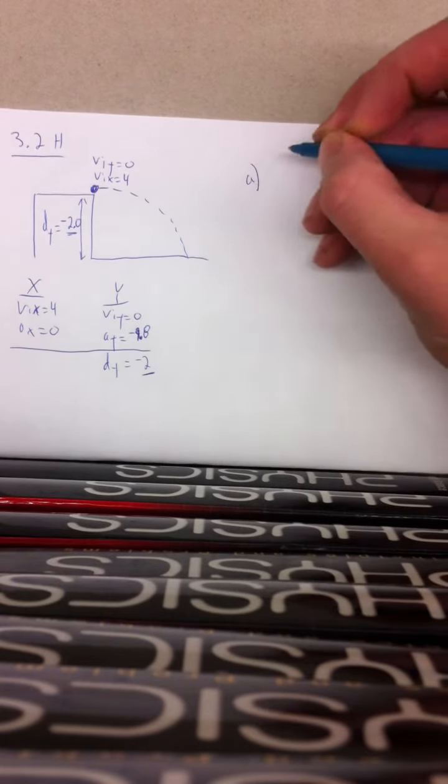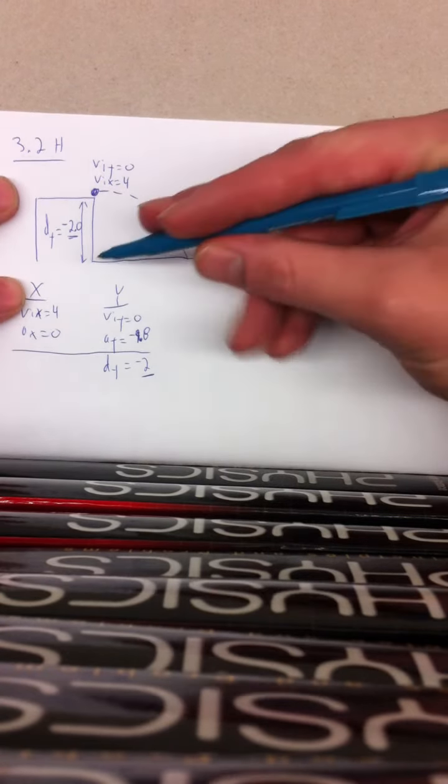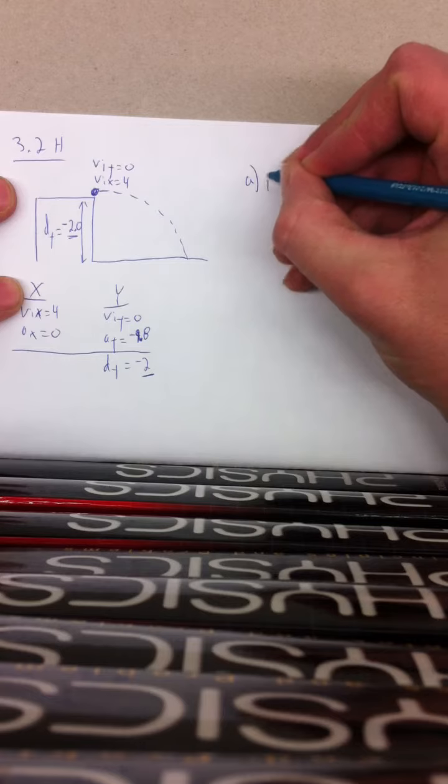This is part A. What is the horizontal distance, or how far does Tom strike the floor? How far away is he from the table? Step number 1, we solve for dx.